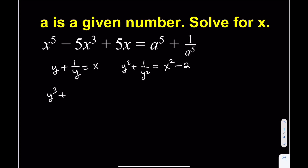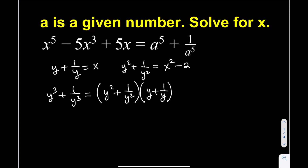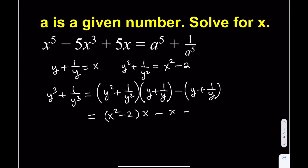Now I'll get y cubed plus 1 over y cubed — not by cubing directly, but by taking y squared plus 1 over y squared and multiplying by y plus 1 over y. That gives what we want plus an extra y plus 1 over y, so we subtract that. The result is (x squared minus 2) times x, minus x, which simplifies to x cubed minus 3x.